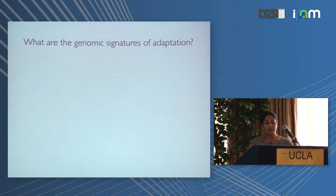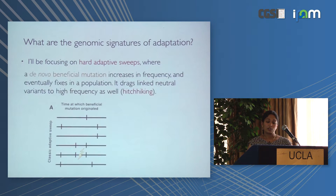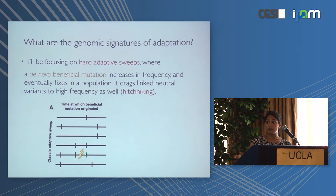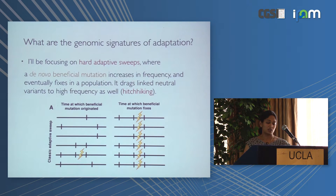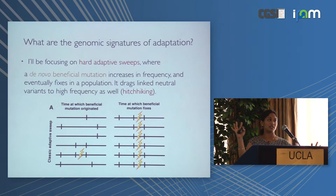In the genomic era we need statistical approaches to identify beneficial mutations in humans, where linkage studies are complicated and we can't do crosses like with yeast. For hard adaptive sweeps, a de novo beneficial mutation arises and is so beneficial that it increases in frequency and eventually fixes, dragging tightly linked mutations to high frequencies while recombination breaks up more distant associations. We observe these hitchhiking mutations in genotype arrays — one student compared these neutral hitchhikers to the best friends of someone who becomes super famous super fast.